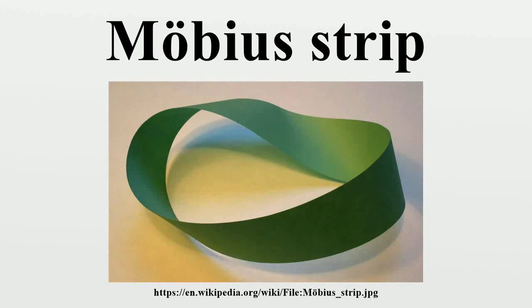The Möbius Strip, or Möbius Band, is a surface with only one side and only one boundary. The Möbius Strip has the mathematical property of being non-orientable. It can be realized as a ruled surface.